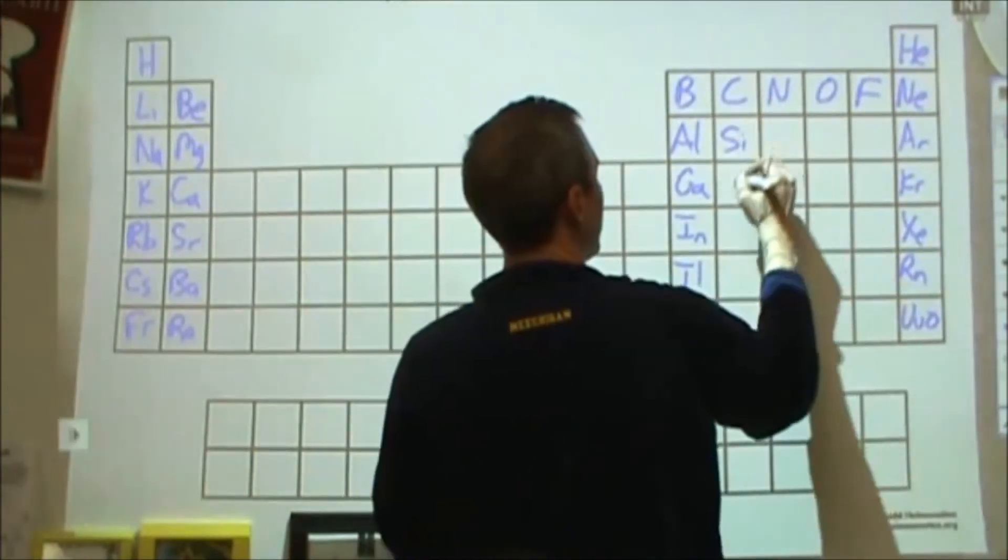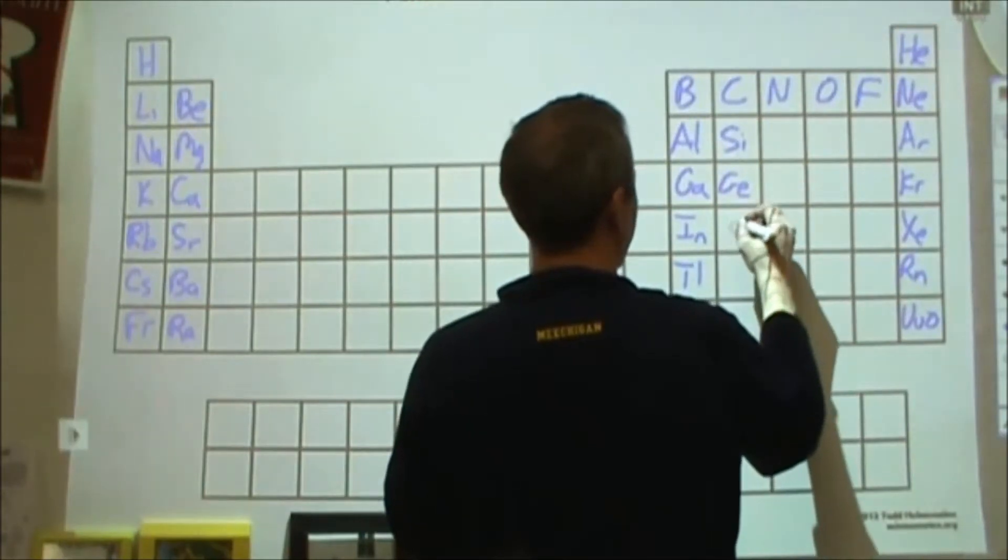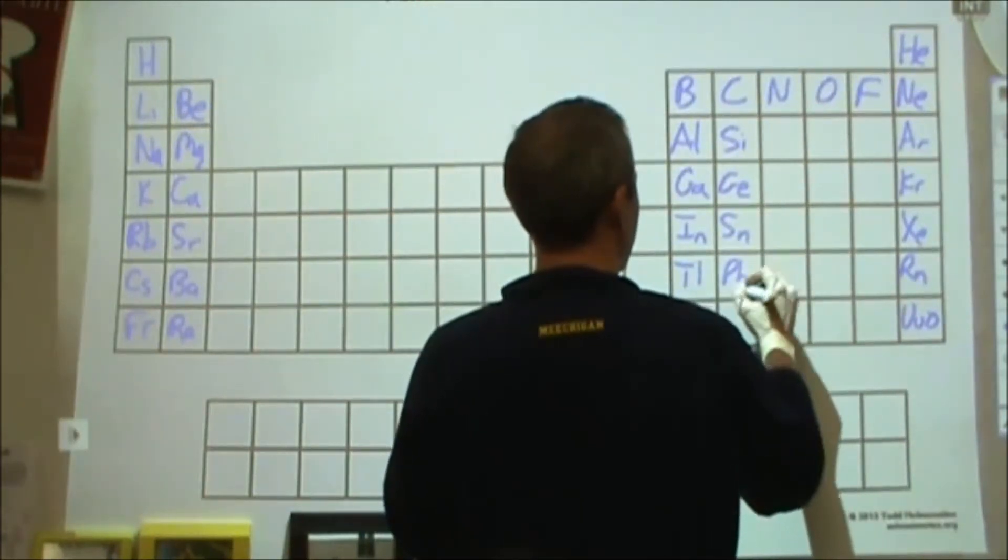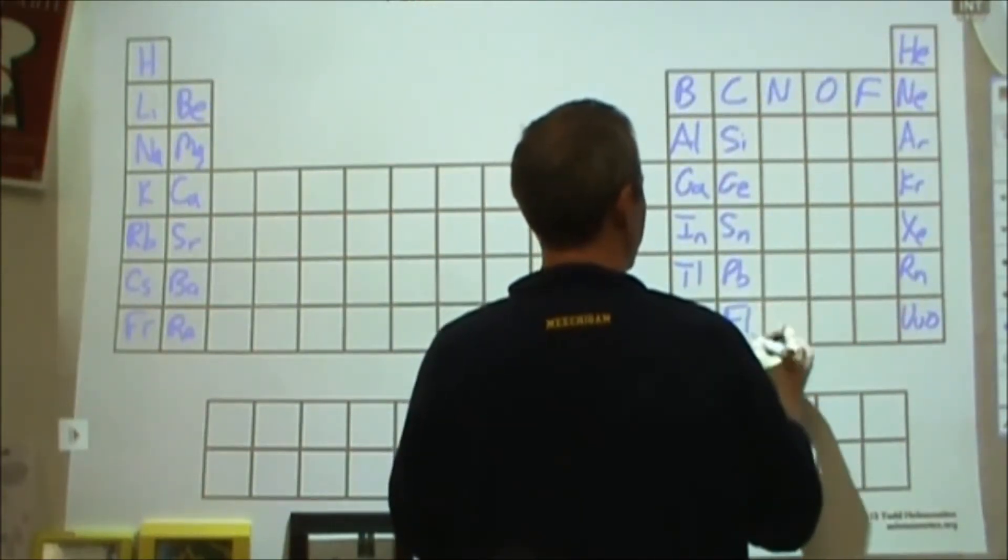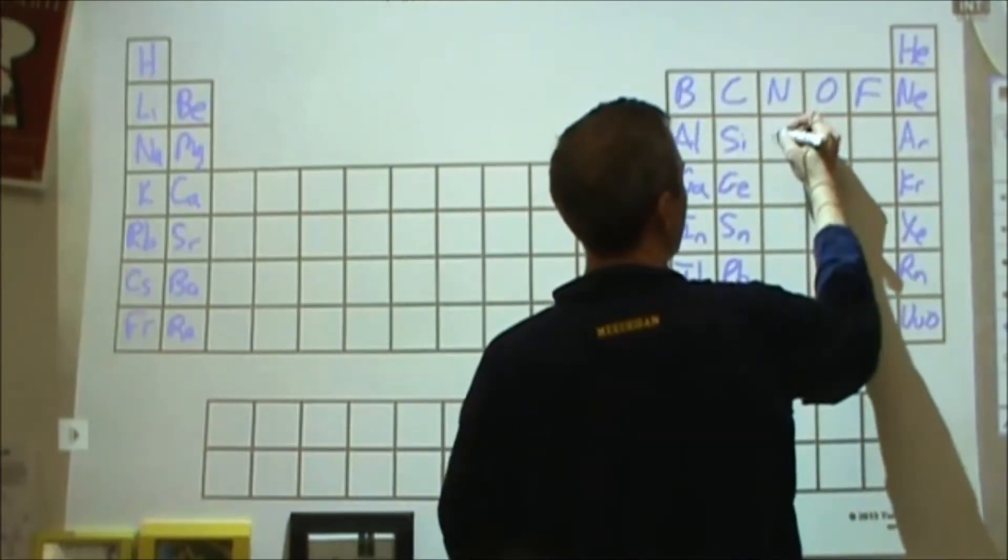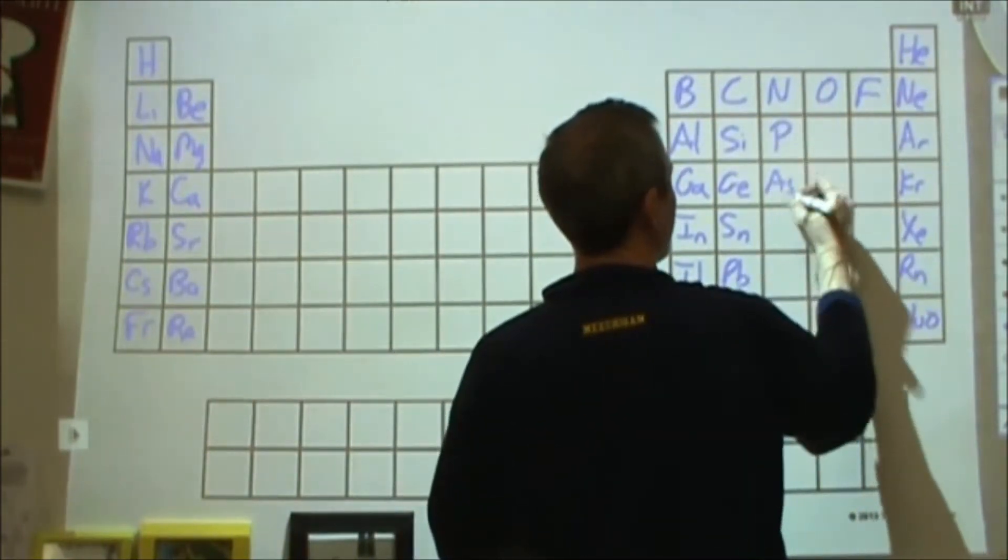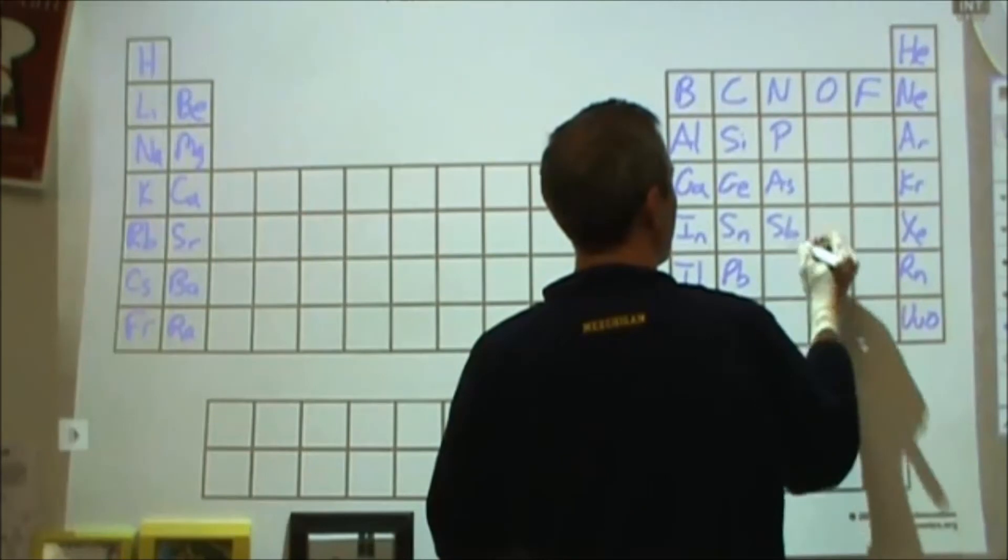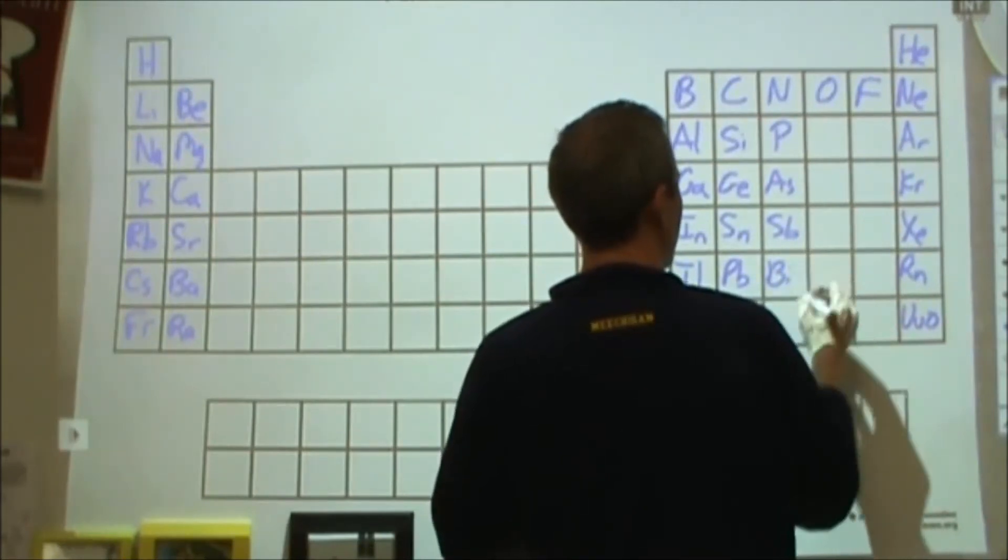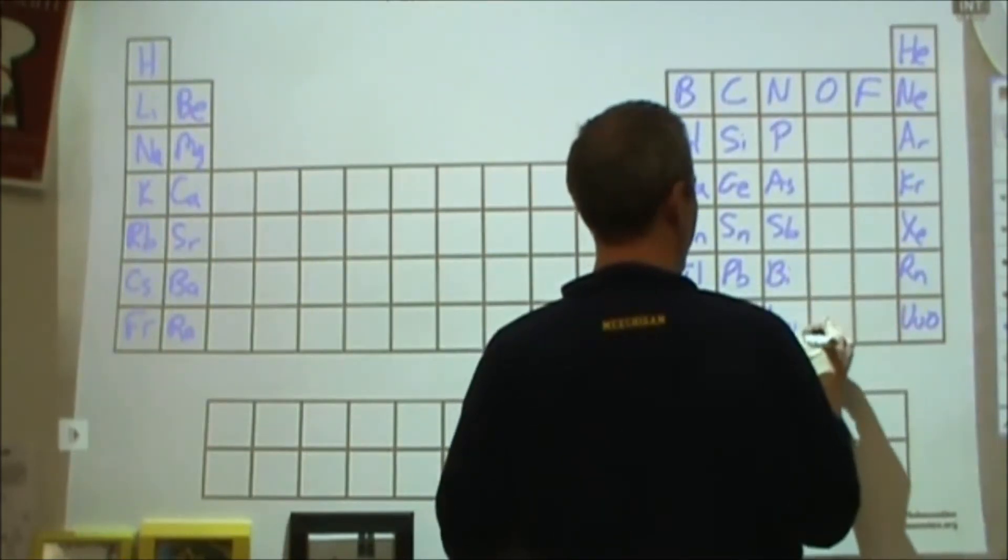And then under carbon we have silicon, germanium, tin, lead, and flerovium. Then under nitrogen we have phosphorus, arsenic, antimony, and bismuth for ununpentium.